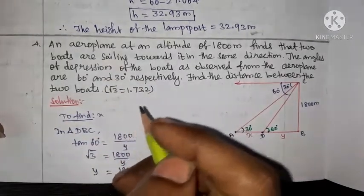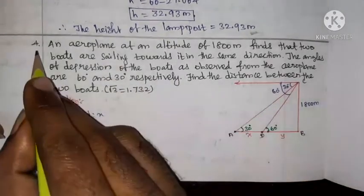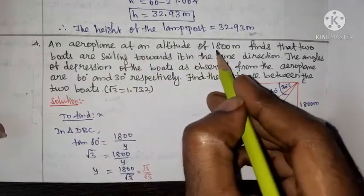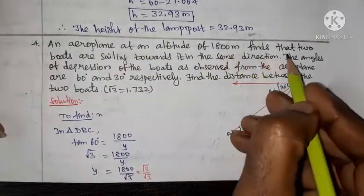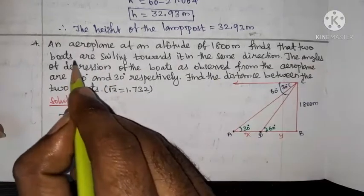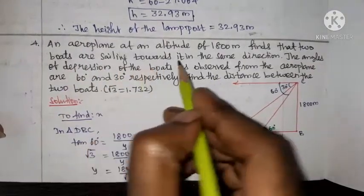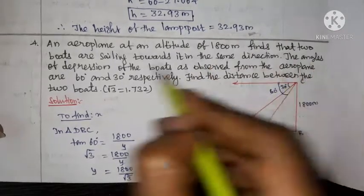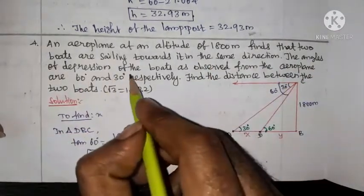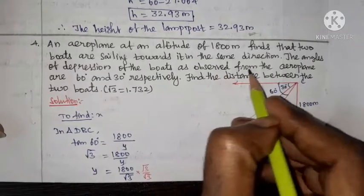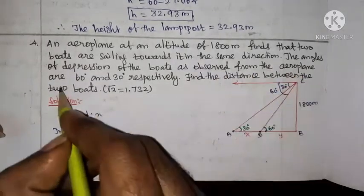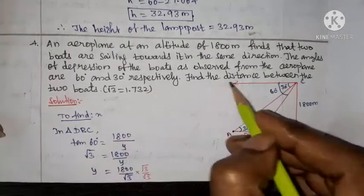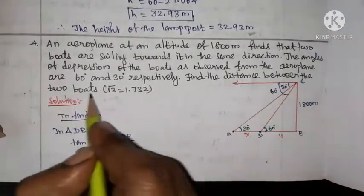Exercise 6.3, Question No. 4. An aeroplane at an altitude of 1800 meters finds that two boats are sailing towards it in the same direction. The angles of depression of the boats as observed from the aeroplane are 60 degrees and 30 degrees respectively. Find the distance between the two boats.